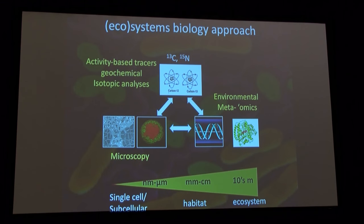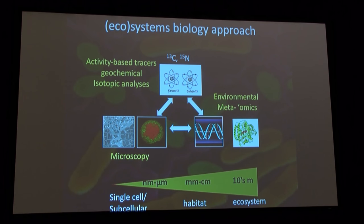In my lab, we've been approaching this through a systems biology or ecosystems biology approach, where we take tools related to stable isotope probing, geochemical techniques, and other activity-based tracers, combine them with environmental omics methods, and incorporate microscopy to see the organisms themselves. This combination of tools needs to be applied across a variety of scales — from the cell or subcellular level all the way up to tens of meters or even kilometers ecosystem scale — as we look at methane cycling in the environment.